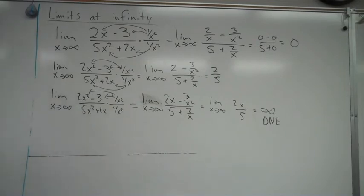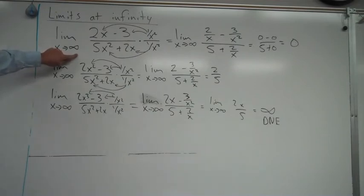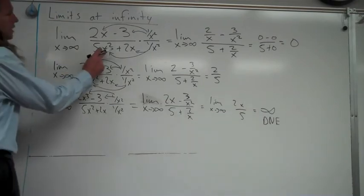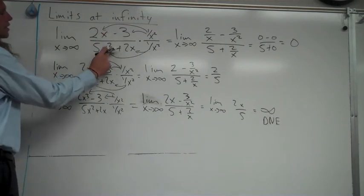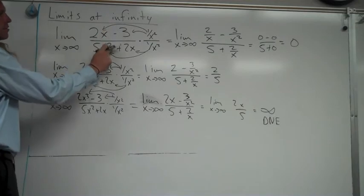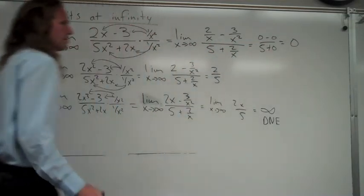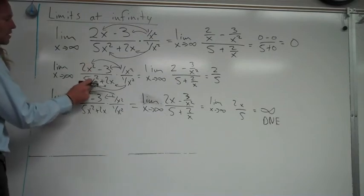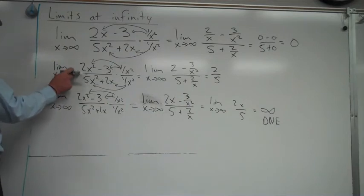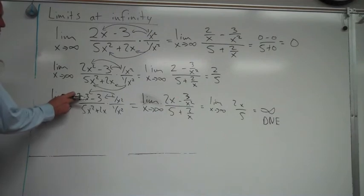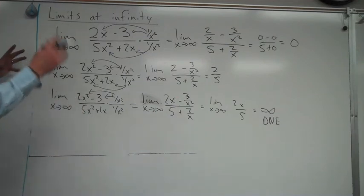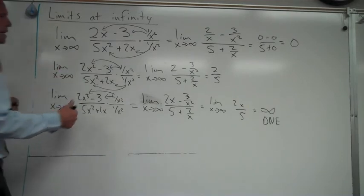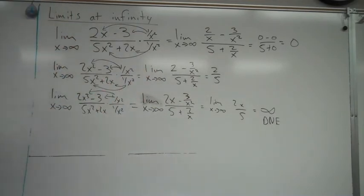From these three cases we can derive three rules that always work when the limit is going to infinity with polynomials on top and bottom. First, if the exponent on the numerator is smaller than the denominator, the limit equals 0 because the bottom grows much faster. Second, when the highest exponents are the same, just look at the ratio of the leading coefficients — that's your answer. Third, when the numerator exponent is larger, the top grows much faster and the limit is infinity or negative infinity — it does not exist.